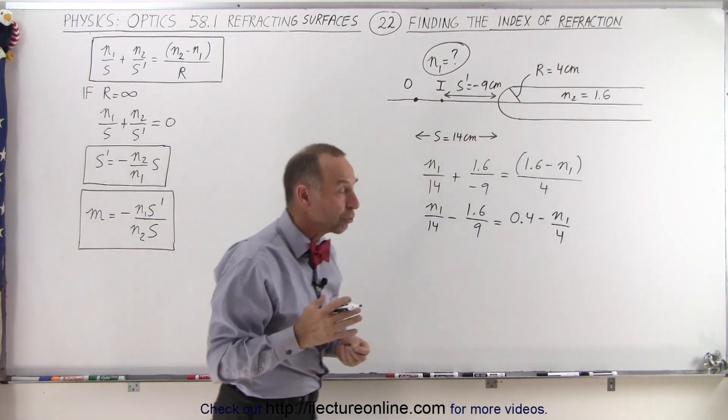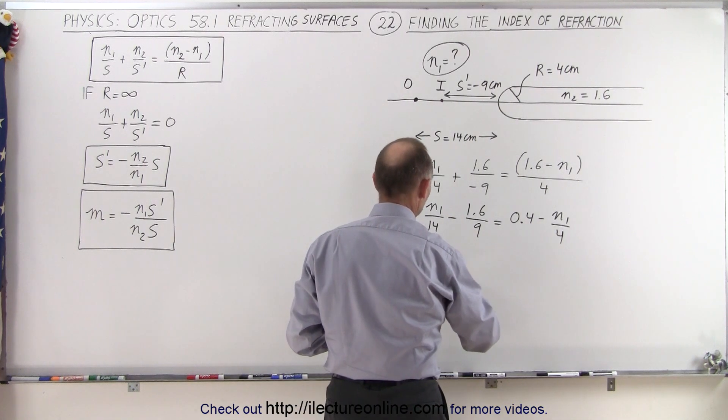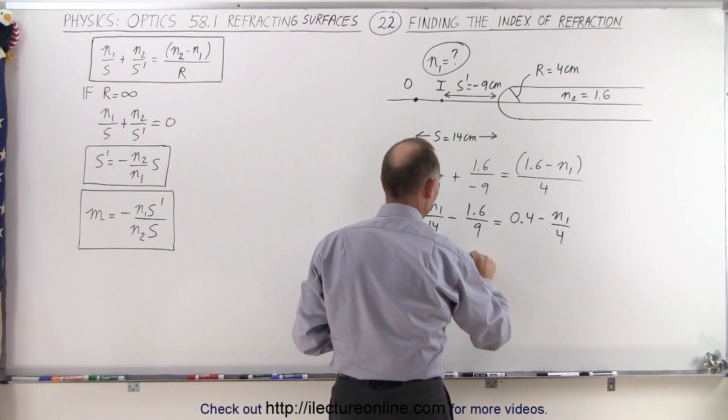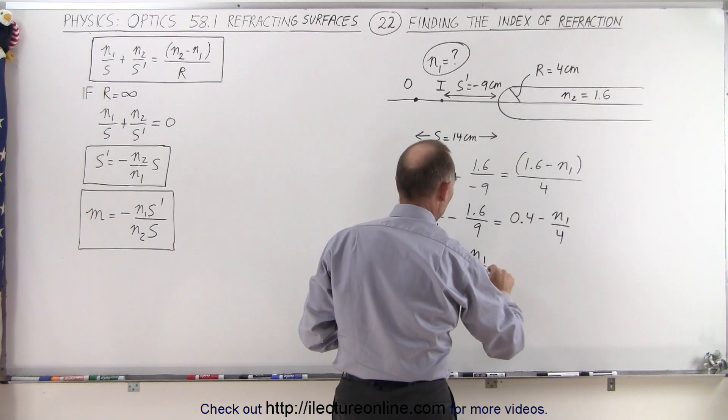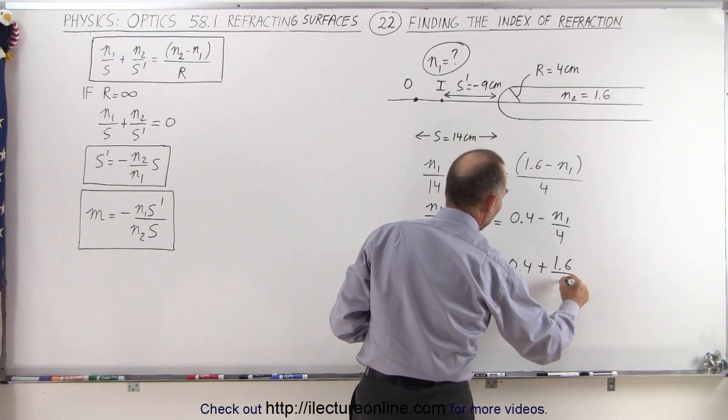Now we can move all the terms that have an n1 to the left side, everything else to the right side. So we have n1 over 14 plus n1 over 4 equals 0.4 plus 1.6 divided by 9.